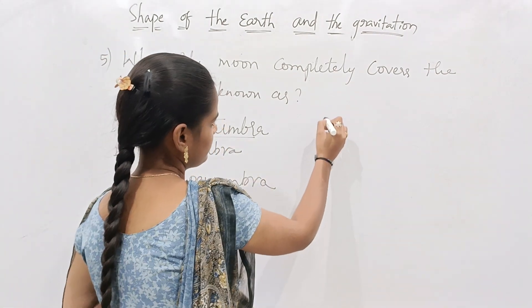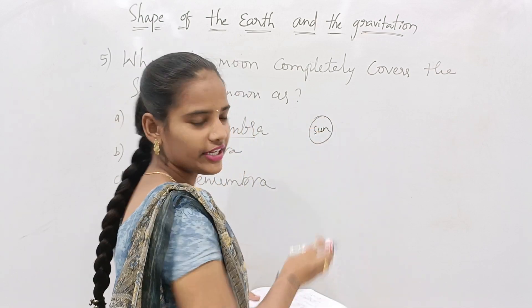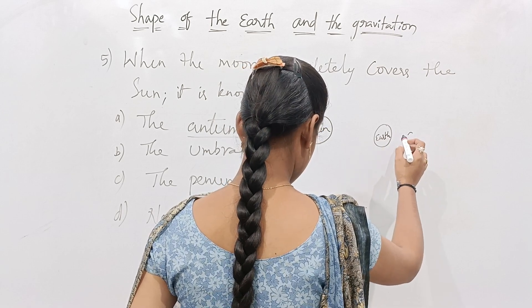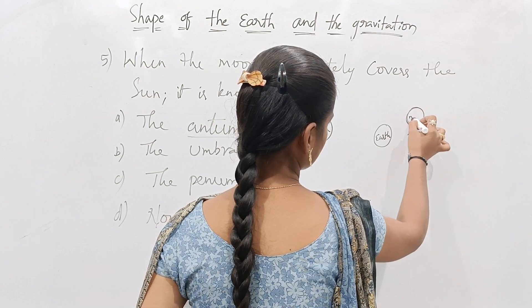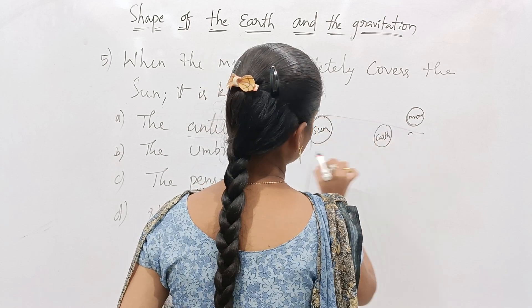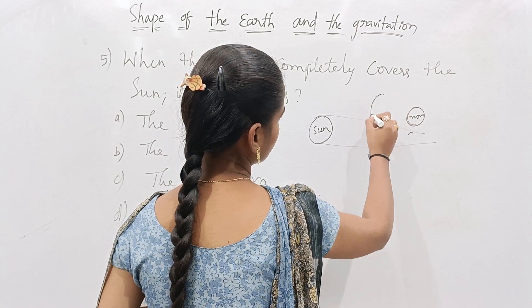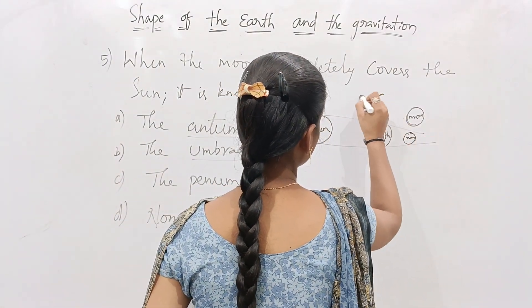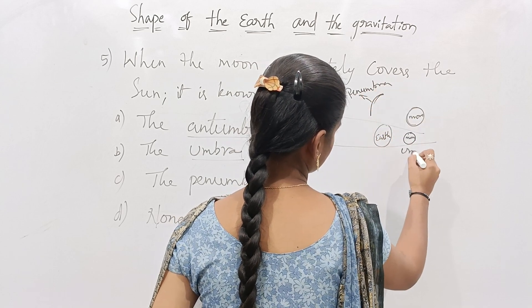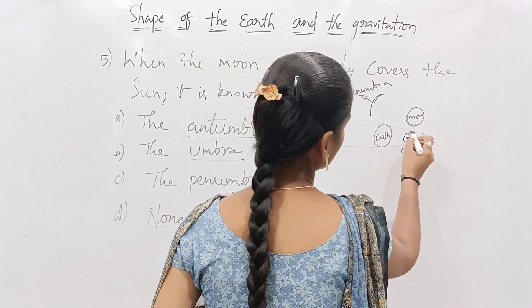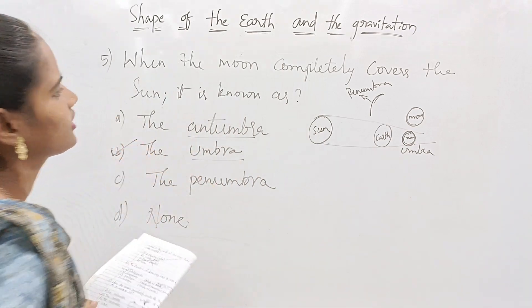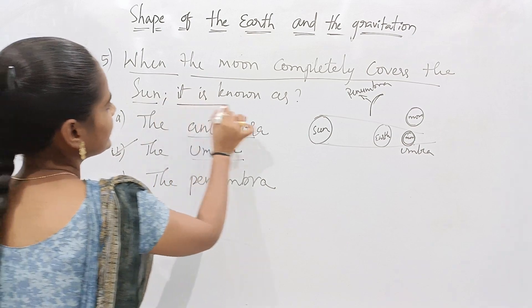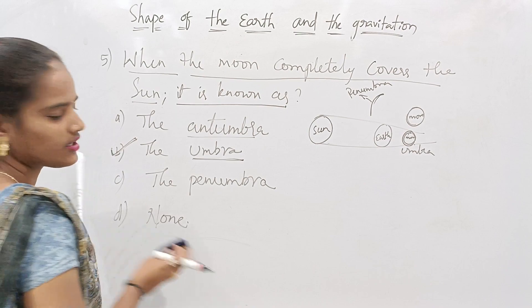The antumbra is when the moon is placed such that it does not completely cover the sun — it looks like a half moon. The umbra is when the moon completely covers the earth's view of the sun. So when the moon completely covers the sun, it is known as the umbra. Option B is the correct answer.